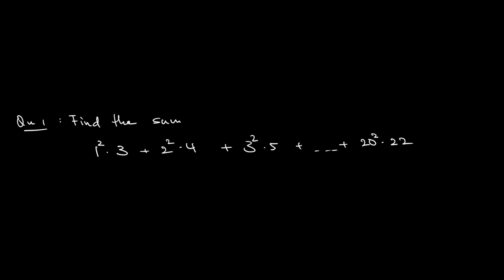The question asks you to find the sum in this expression: 1² × 3 plus 2² × 4 plus 3² × 5, all the way until 20² × 22. So how do we solve this telescopic sum? Let's try together.